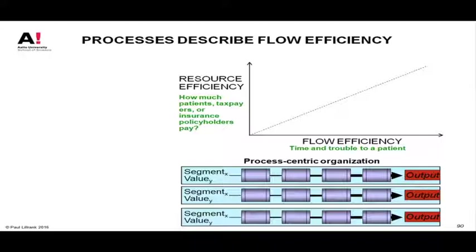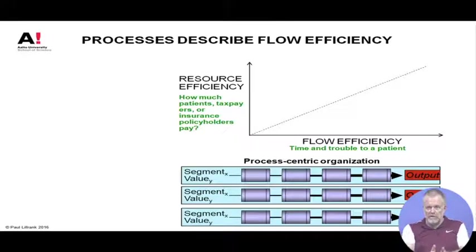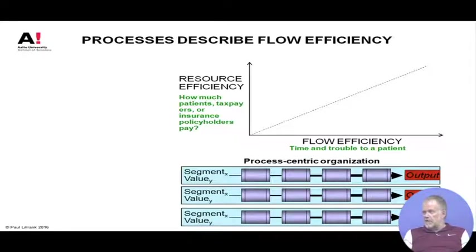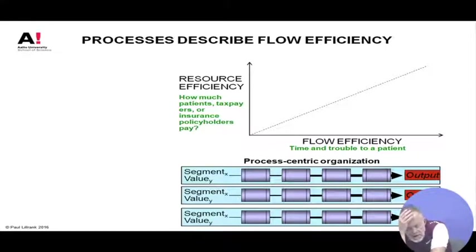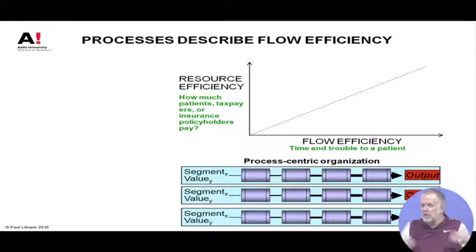That's why in industrial management, during the 1970s and 80s due to the Japanese influence, there was a shift from resource efficiency to flow efficiency. Earlier the main idea was resource efficiency — you look at every machine, every production line, every person and check the capacity utilization rate, because resources should be utilized with maximum efficiency. This thinking even extended to labor management and universities — the idea that you should keep working all the time.